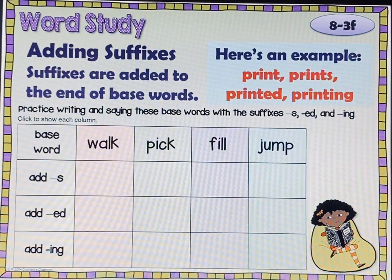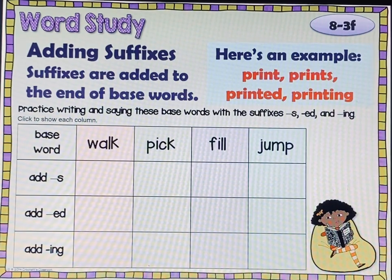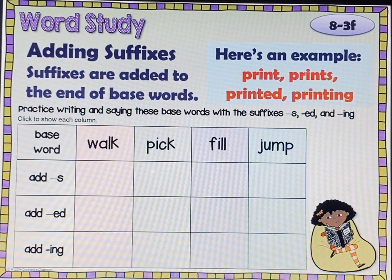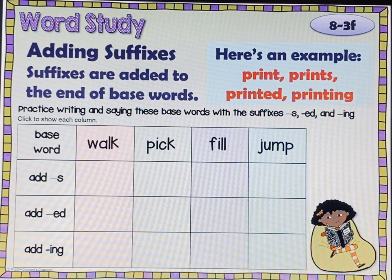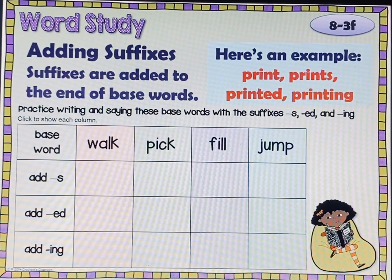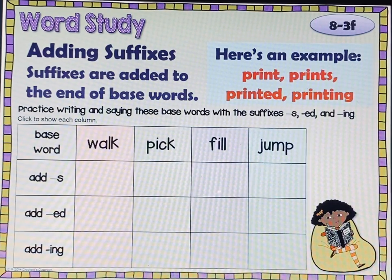That was the last one, but it's really good if you practice writing these with the endings — it will actually help you with your reading. Sometimes when people read 'walk,' if it has an S on it, they'll just say 'walk' instead of 'walks,' or leave off 'walked' or the ING. Reading and writing, when we learn them, tend to walk hand in hand. So go ahead and write: walk, walks, walked, walking; pick, picks, picked, picking; fill, fills, filled, filling; jump, jumps, jumped, jumping. And when you're done, that's it.